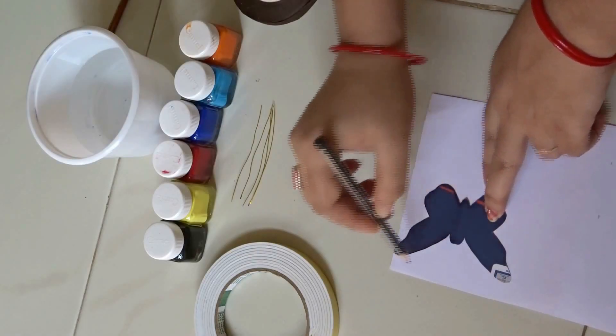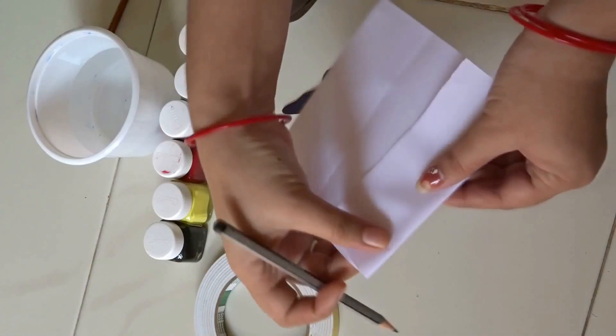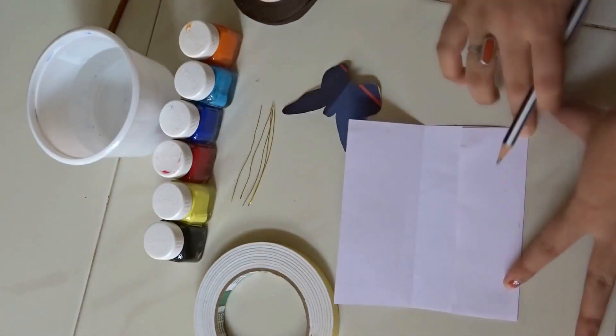Now you can trace it like this, or else mark the midpoints and fold it by following the marks. Then place it here and trace it by following the edges, then cut this out.